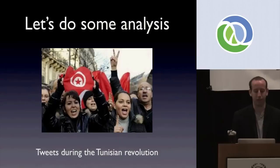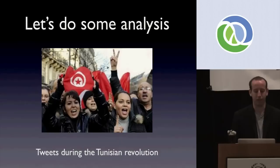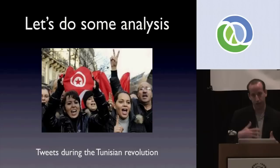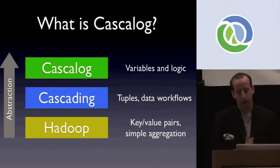Back around January, there was a lot of activity on Twitter when the Tunisian revolution started happening. What we're going to do in this talk is analyze the tweets about Tunisia from that time period using Cascalog. Through the analysis, I'm going to demonstrate the power of Cascalog and how much fun it is to use. But before we get to that, let me cover the basics so you can follow along.